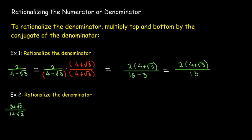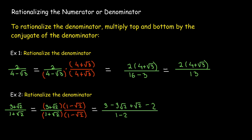So we multiply top and bottom by 1 minus radical 2. In the numerator I have to use FOIL — this is the product of binomials. In the denominator I have 1 minus radical 2 squared, and radical 2 squared is 2. After multiplying out the numerator, I do have like terms, so I combine them and subtract, getting negative 1. It's a little awkward to have negative 1 in the denominator, so I'll divide each term by negative 1, which just changes their signs, giving me negative 1 plus radical 2.